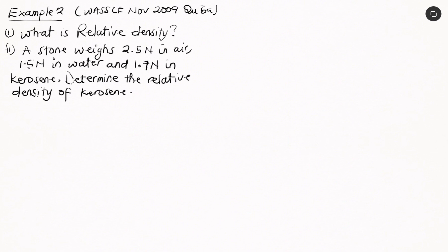Now let's look at the second example: November 2009, question number 5A. Part I asks what is relative density — which we've already covered. Part II states: a stone weighs 2.5 Newtons in air, 1.5 Newtons in water, and 1.7 Newtons in kerosene. We are to determine the relative density of kerosene.